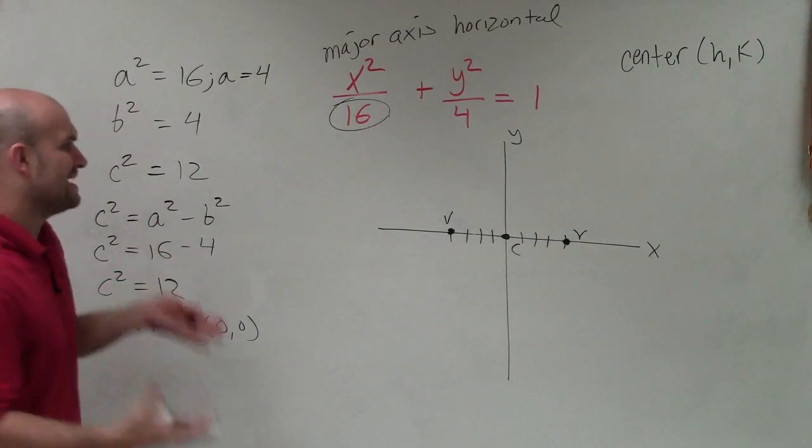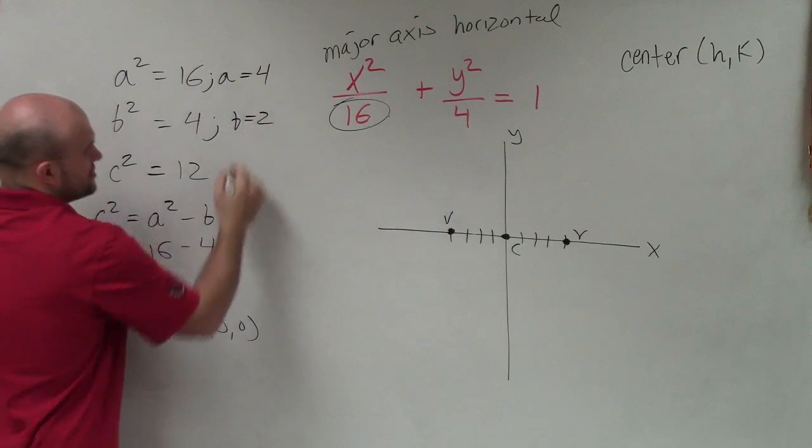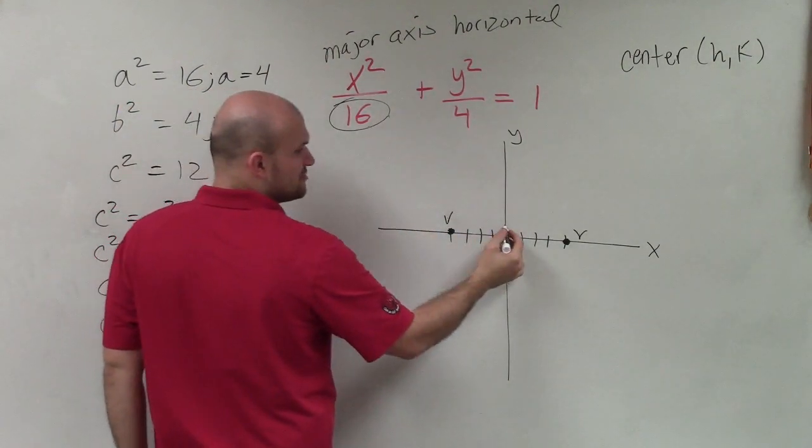Now I didn't state what the co-vertices are, but the co-vertices would be a distance of b. So b equals 2. So that's going to be the opposite direction, which of b would make my minor axis, which is